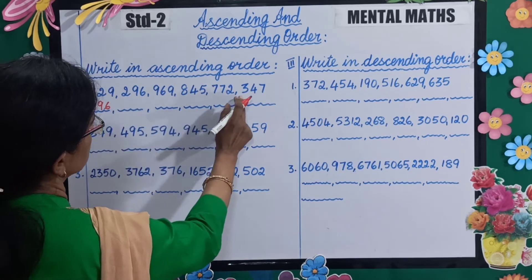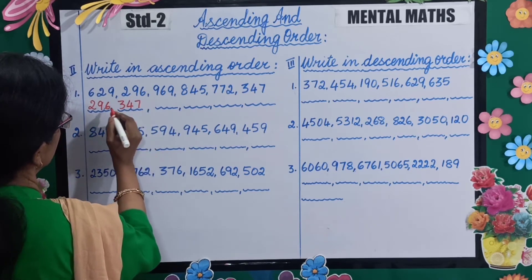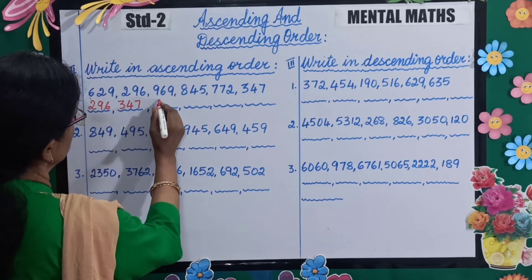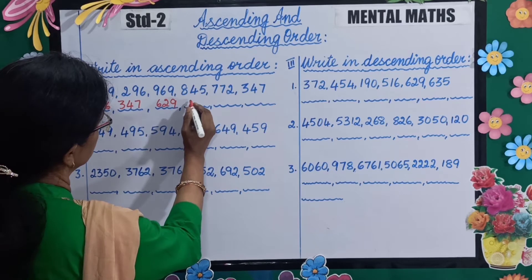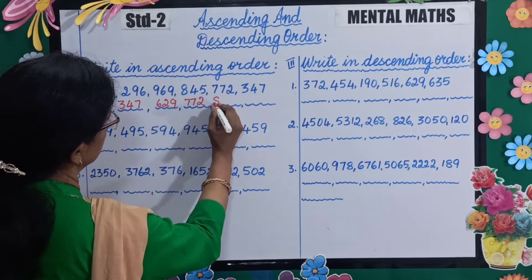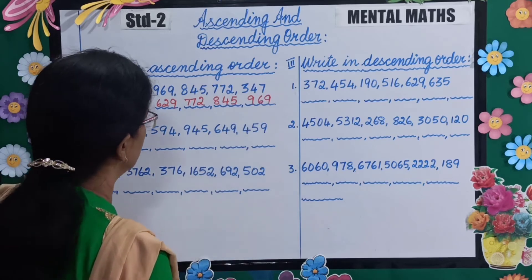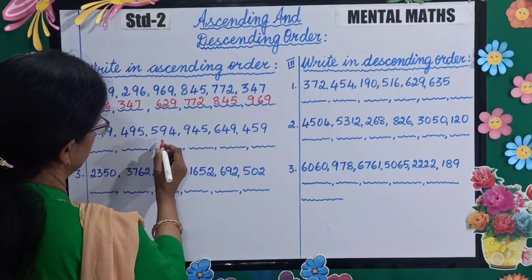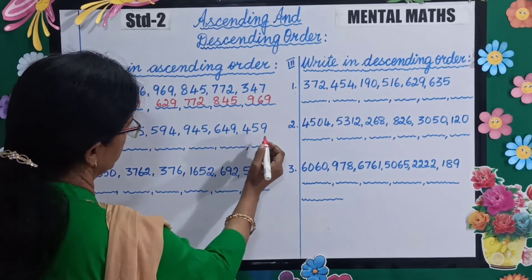Next is 347, then 629, then 772, then 845, then 969. Now for the next set: 849, 495, 594, 945, 649, and 459.